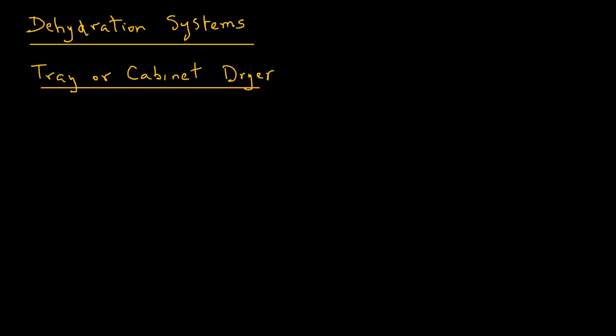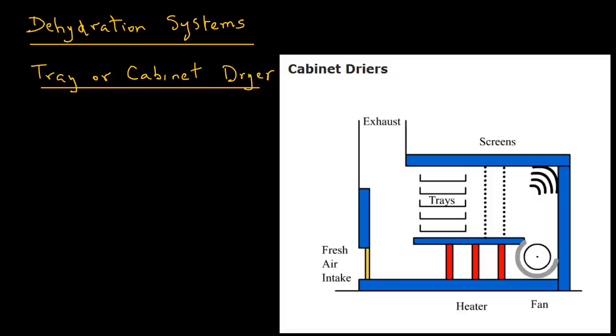Let's look at some of the drying systems used in the food industry. A very common type is a tray or a cabinet dryer.